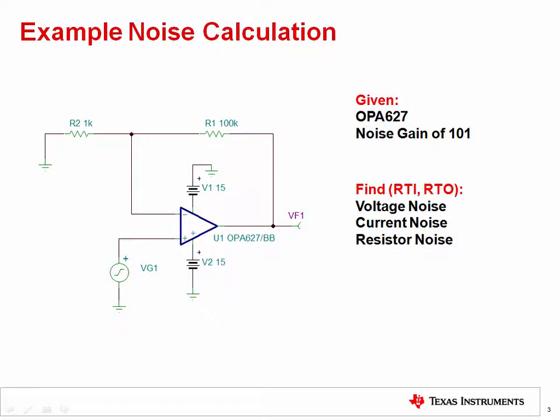Let's go back to our example noise calculation. In this example, we will examine an OPA627 in a non-inverting configuration with a gain of 101 volts per volt. The total noise at the output will be the sum of op-amp voltage noise, op-amp current noise, and resistor noise. We will have to consider both the 1 over f region and the broadband region in the noise spectral density curves. We will also have to consider the noise bandwidth and the noise gain of the circuit.